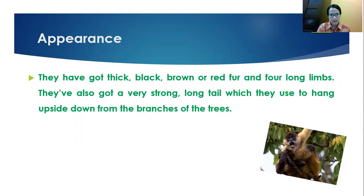They have got thick black, brown or red fur and four long limbs. They have also got a very strong long tail which they use to hang upside down from the branches of the trees. As you can see here, thick black, brown and red fur is the color of the fur. And also, another part is four long limbs. So for this kind of part, they are referring to appearance of the spider monkeys. Now this is called as adjective order. Later we will study how to order the adjectives if you have more than one.